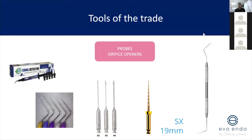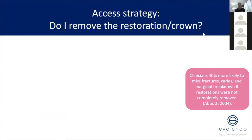I use orifice openers very rarely — unless it's really complex anatomy like an S-shaped canal. Also, you can only find what you can see, and if you're struggling, using canal detection dye — which is basically methylene blue — can help assist you in the process.